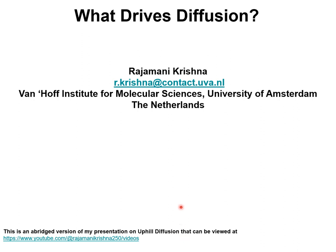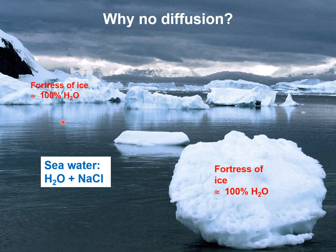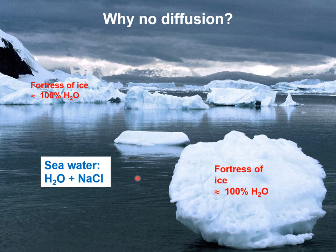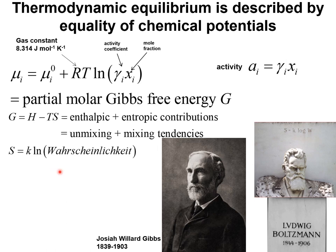We start our journey in Antarctica. Here is a picture taken in Antarctica showing fortresses of ice containing nearly pure H₂O in contact with seawater that contains salt. The question arises: why is there no diffusion of salt from seawater into the ice fortresses? In order to resolve this paradox observed in Antarctica,